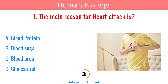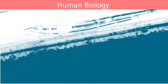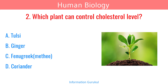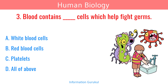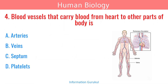The main reason for heart attack is cholesterol. Which plant can control cholesterol level? Fenugreek, commonly known as Methi. Blood contains cells which help fight germs — white blood cells. Blood vessels that carry blood from the heart to other parts of the body are called arteries.